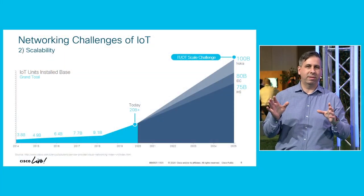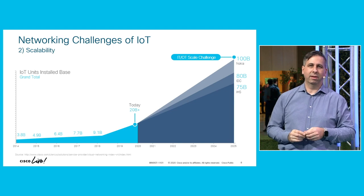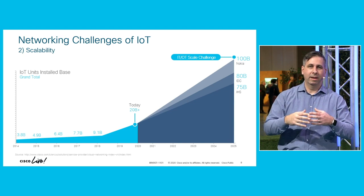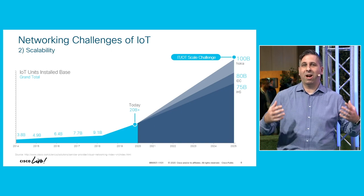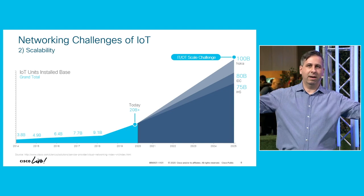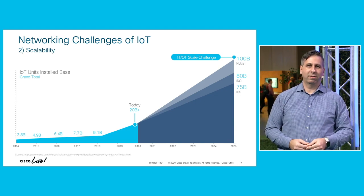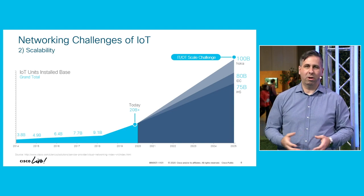The second main challenge is scalability. Regardless of what analysts you listen to, the projections are all astronomical as to how many devices are coming online. Here at Cisco, a company of 70,000 employees, we already manage more than 500,000 devices today. Just one company — half a million devices. You can see how as this scales over time, managing all these devices becomes another overwhelming challenge.